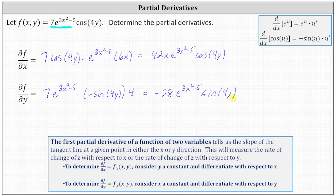Before we go, let's talk about the meaning of these partial derivatives. The first-order partial derivative of a function of two variables tells us the slope of the tangent line at a given point in either the x or y direction — more specifically, either the positive x or positive y direction. The value of the partial of f with respect to x at a point gives us the slope of the tangent line in the positive x direction, and the value of the partial of f with respect to y gives us the slope of the tangent line in the positive y direction.